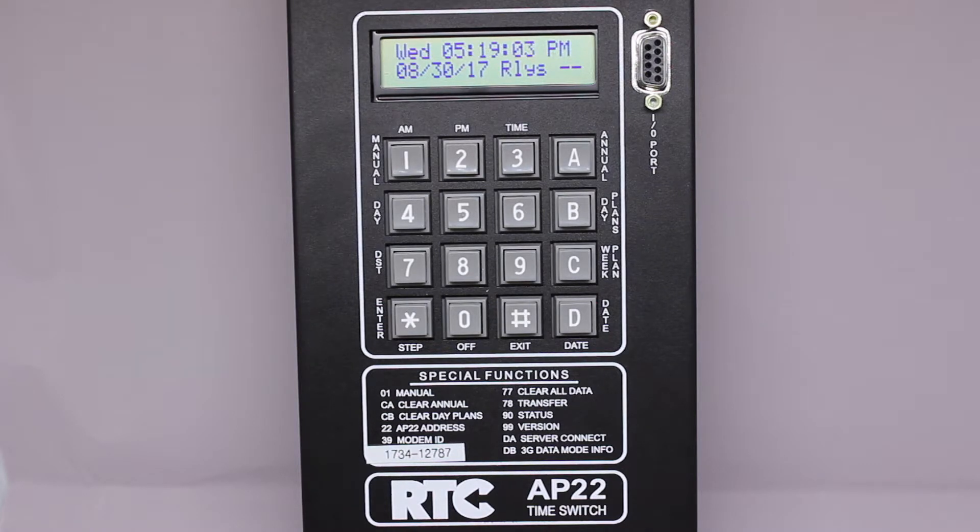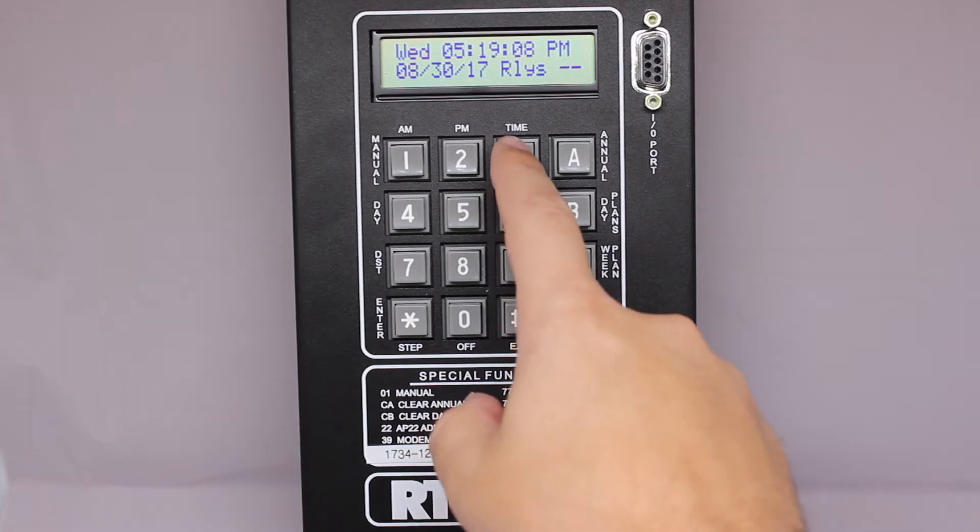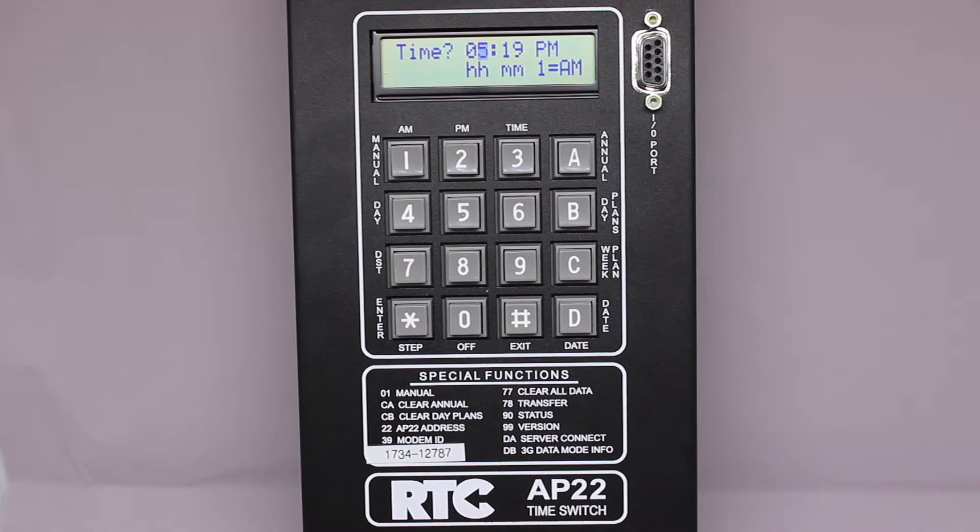To change the time on the time switch, press the 3 key and then the star enter key. Similar to the date, you'll just use the number keys to enter the correct time and press star to move to the next section.